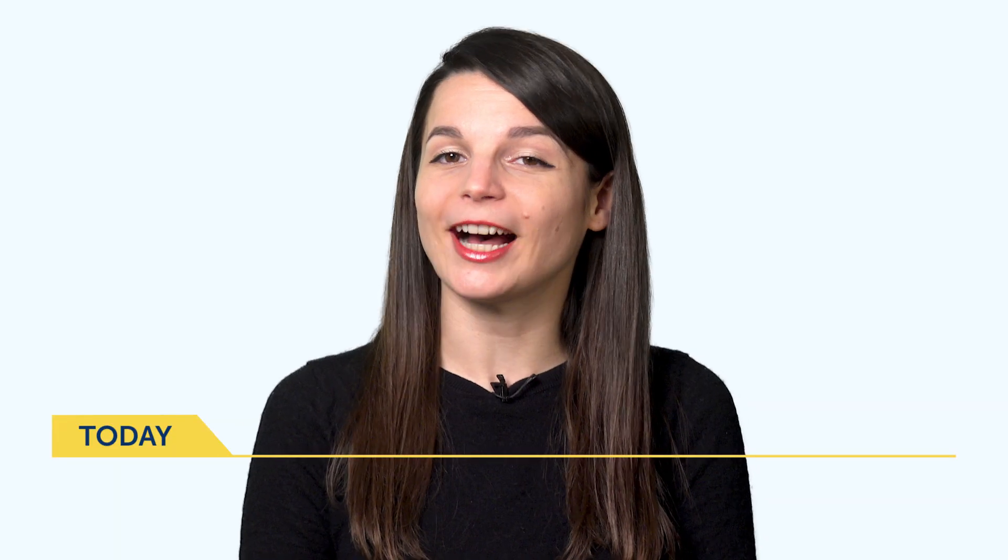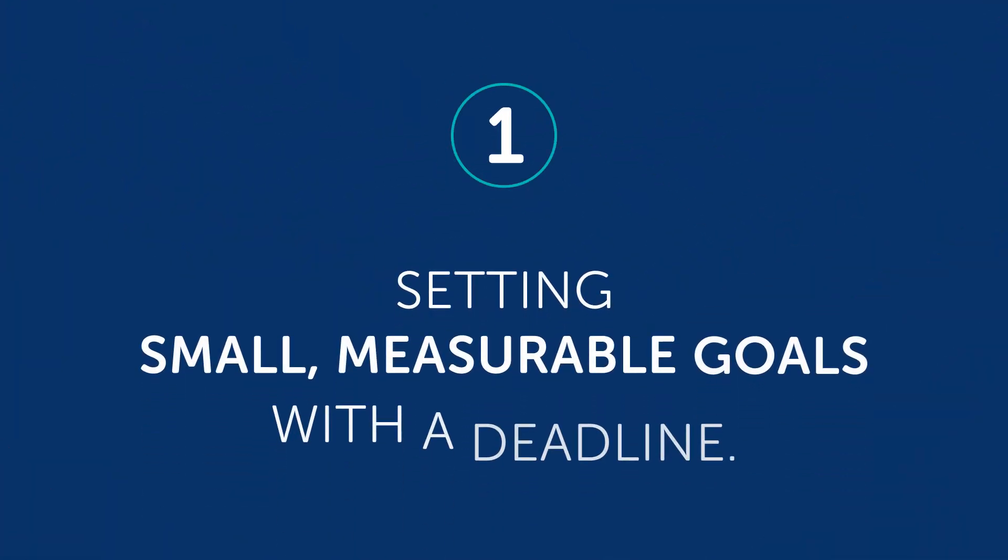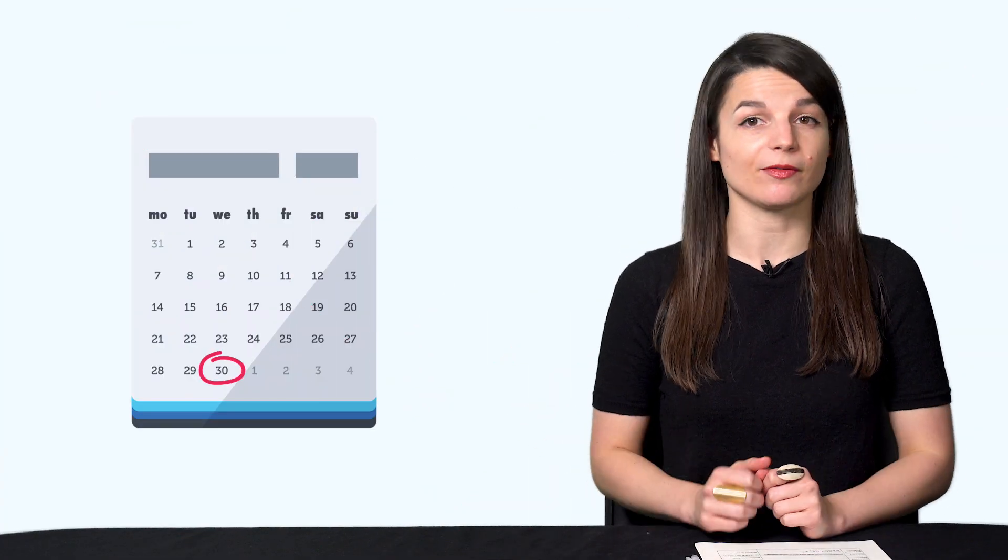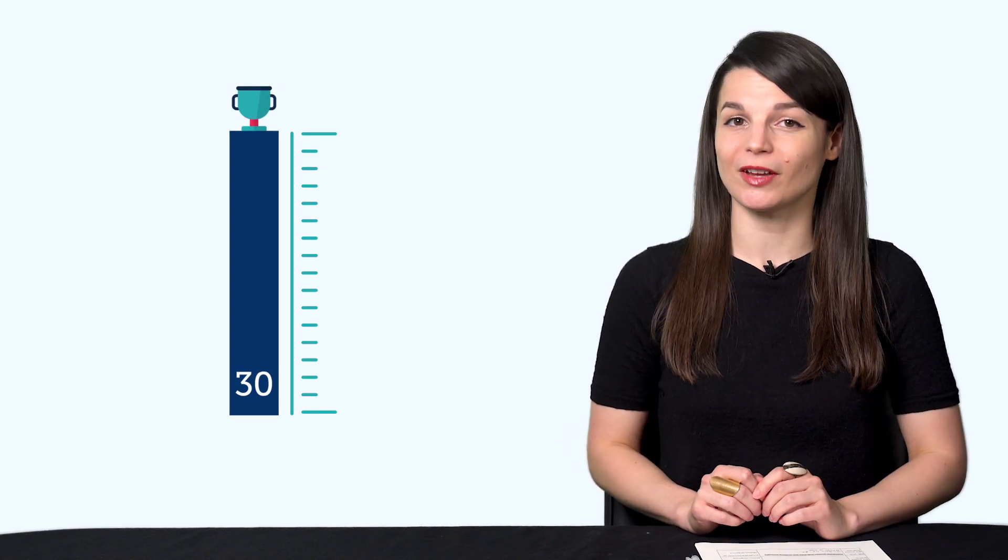10 Habits of Highly Effective Language Learners. If you walk away from this lesson and remember only one habit, let it be this one. Habit number one: setting small, measurable goals with a deadline. For example, do 30 of our language lessons by the end of this month. 30 is small. You're not learning the whole language here. It's measurable. Either you did 28 or you hit 30. And you know when to reach it by, which gives you motivation.